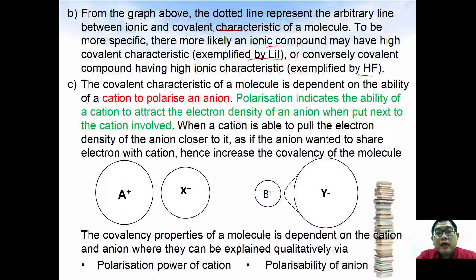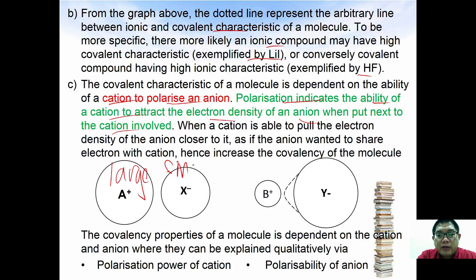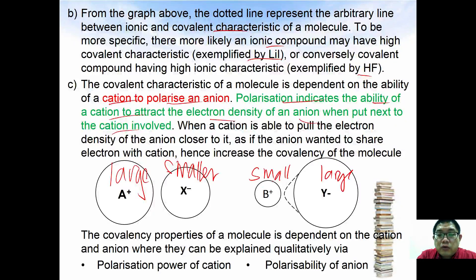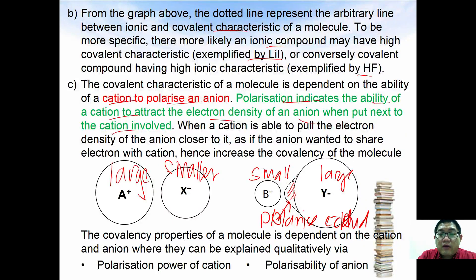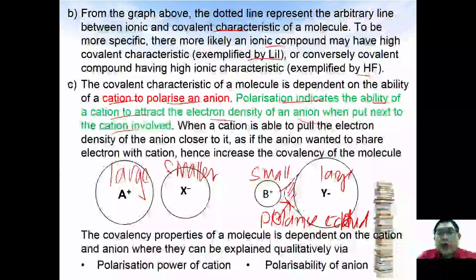Compounds like LiI may have high covalent character, while HF may have high ionic character. The covalent character of a molecule depends on the ability of the cation to polarize the anion. Polarization refers to the cation attracting the electron density of a neighboring anion. If a large cation is placed next to a small anion, it cannot distort the electron cloud. However, a small cation next to a large anion can polarize it, drawing electron density closer as if forming a covalent bond, increasing covalent character.